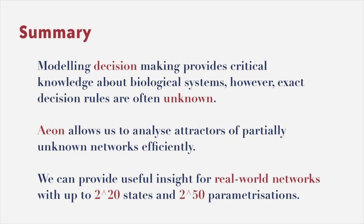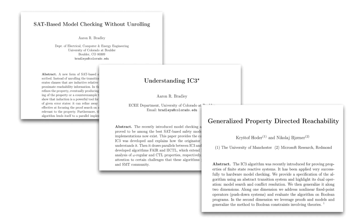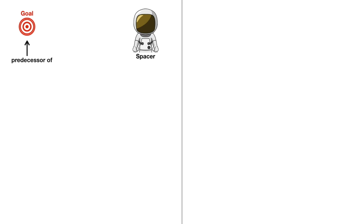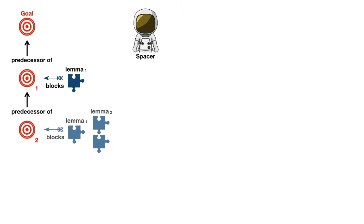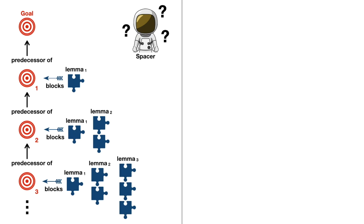Property-directed reachability, also known as IC3, is an efficient approach for model-checking finite-state transition systems. Its generalization to constrained Horn clauses enables efficient analysis of infinite-state systems such as software and hybrid systems. State-of-the-art CHC solvers such as Spacer iteratively explore deeper sets of proof obligations, learning lemmas locally by blocking them. While effective, this approach can be brittle due to many local failures of the generalization used.